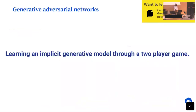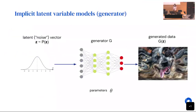GANs learn an implicit generative model through a two-player game. By implicit generative model, we mean a latent variable model that is able to generate data, but we cannot query for likelihood. One way to think about these models is that they are simulators — they can generate samples from the distribution they learn, but we cannot ask how likely it is that another data point was generated by this distribution.